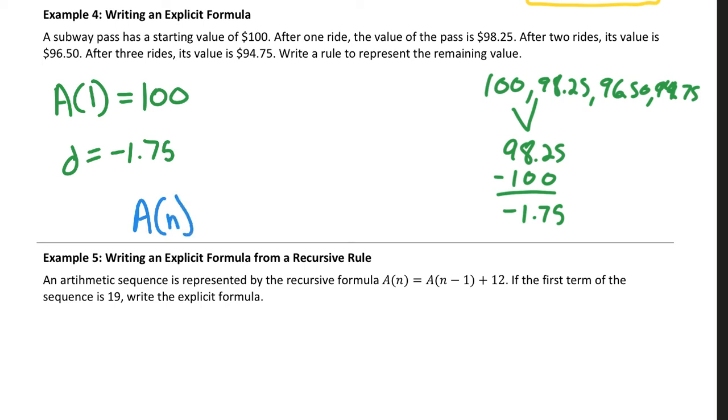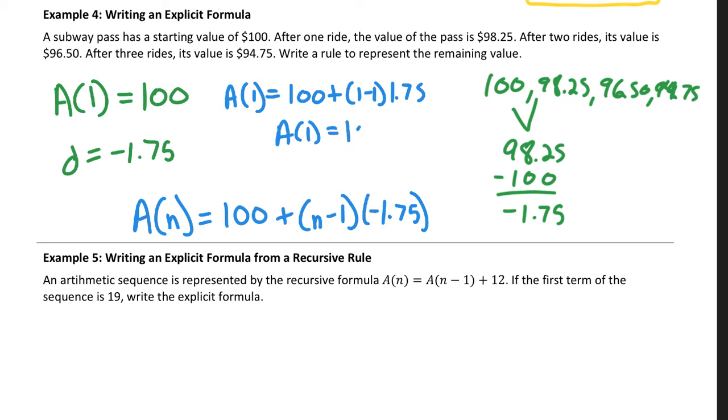A parentheses N. So A of N. I say A of N when I see that. That's that function notation. I'm going to start with the first term. 100 plus... And basically what it says is, you take N minus 1 times that common difference. So N minus 1 times negative 1.75. And I know that looks a little goofy. But essentially what you're saying is, if I'm figuring out term 1, A of 1, this will be 100 plus 1 minus 1 times 1.75. And that should make sense that my first term ends up being 100.